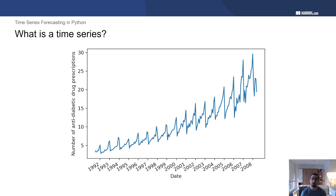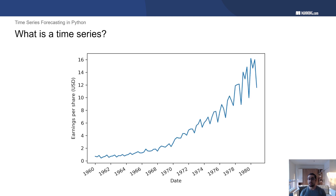Here's an example of a time series: the monthly number of anti-diabetic drug prescriptions in Australia. This is data recorded every month. Here we have another example — quarterly data: the quarterly earnings per share for the company Johnson & Johnson, recorded every three months in a year.